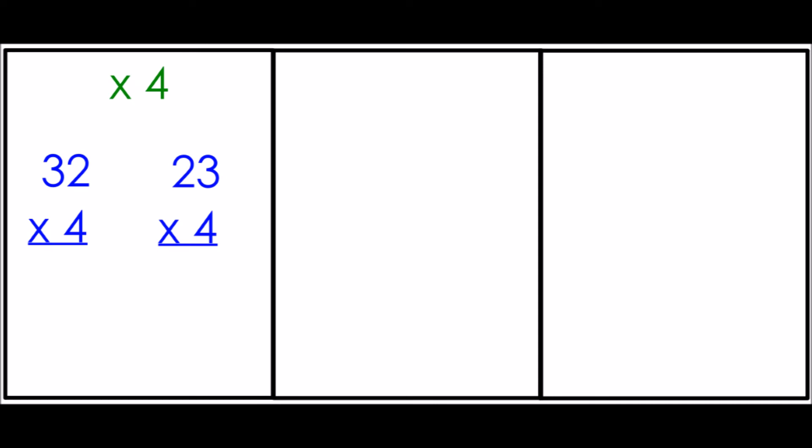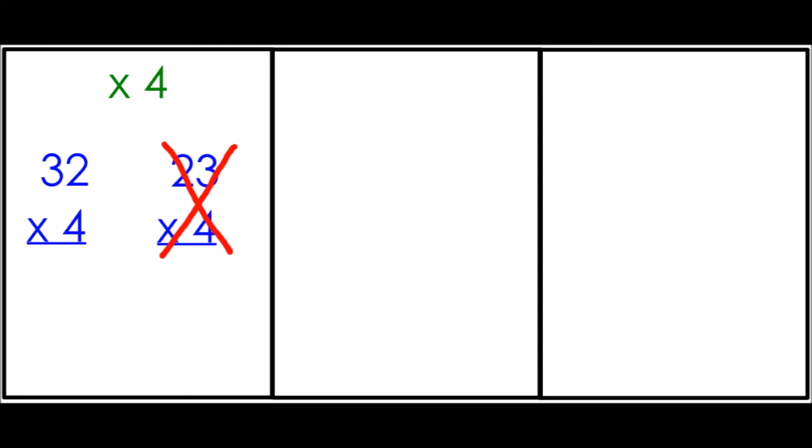Now between those two, there's one that's obviously going to be greater. 32 times four is going to be greater than 23 times four because it's 32 groups of four instead of only 23 groups of four. So I'm going to cross out 23 times four. I bet I'm already crossing that on my brainstorming. That can't be the largest product.